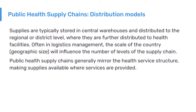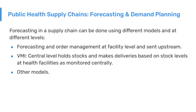The public health supply chain generally mirrors the structure of the health service in-country. Forecasting and supply planning can be done using different models, where forecasting is done and orders sent from facilities to an upstream system. Another model is vendor-managed inventory, where shipping facilities send orders based on consumed stock, and other models may also be present.